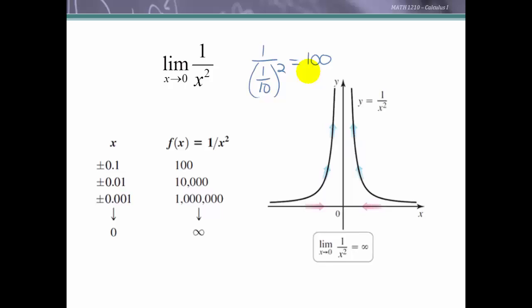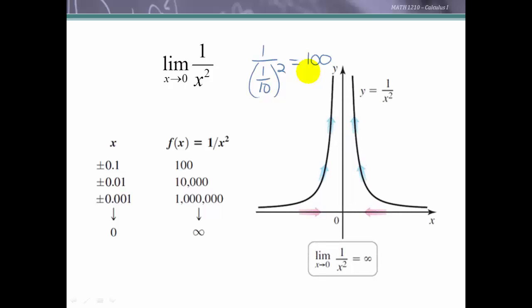So 1/x² is going to approach infinity. Graphically, as we approach 0 from the left or from the right, we can see that the function value is getting larger and larger towards infinity. From both the left-hand side and the right-hand side, we are approaching positive infinity. If one side were positive infinity and the other negative infinity, that would be a different story — we'll talk more about infinite limits in a later section. But though the limit doesn't exist, we say it equals infinity to signify that from both sides it is heading towards infinity.